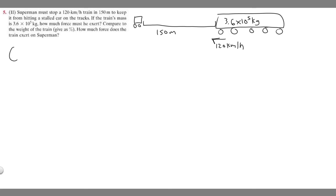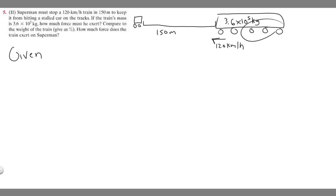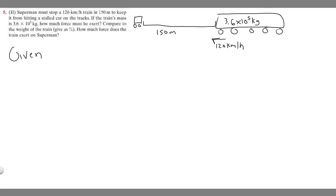Let's go ahead and write down our givens first. This is the diagram — the train has to stop within 150 meters so it doesn't hit the other car. So the first thing we're told is that this train is traveling 120 kilometers per hour, so we know the initial velocity v sub zero is going to be 120 kilometers per hour.